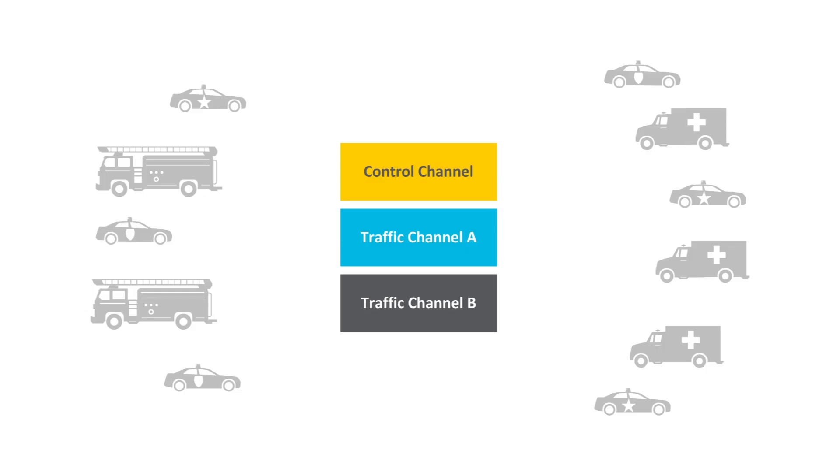In busy cities where there are many different critical groups sharing the same network, a site had to have enough capacity for all these groups or teams to be able to use the radio system at the same time. This can quickly use up all the available channels in that area. In a trunked radio network, if more groups are allocated to the radio network than there are physical channels, most of the time the system works well. However, when the system gets busy and many groups are making calls at the same time, there will be times where there are not enough channels and some teams would have to wait before they could access the radio system.